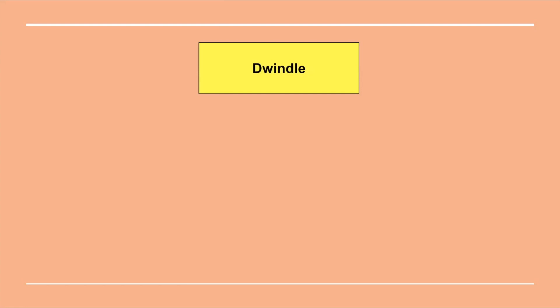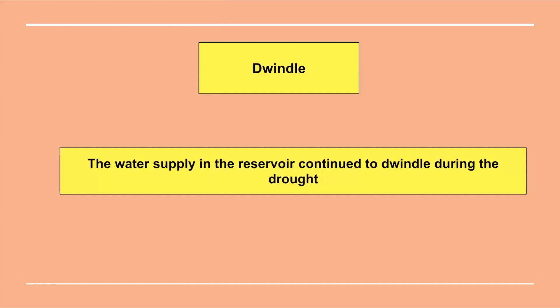The last word in this family is dwindle. The meaning is also similar to the other words — to diminish gradually in size, amount or strength. For example: the water supply in the reservoir continued to dwindle during the drought. During the drought, the water supply decreased in amount — hence the word dwindle.